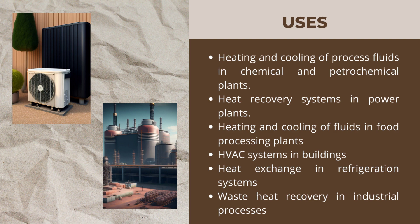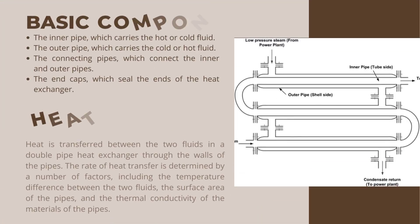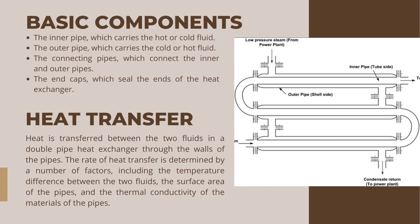The basic components of a double pipe heat exchanger are: the inner pipe, which carries the hot or cold fluid; the outer pipe, which carries the cold or hot fluid; the connecting pipes, which connect the inner and outer pipes; and the end caps, which seal the ends of the heat exchanger. The inner and outer pipes can be made of a variety of materials including steel, copper, and stainless steel. The connecting pipes and end caps are typically made of the same material as the inner pipe.